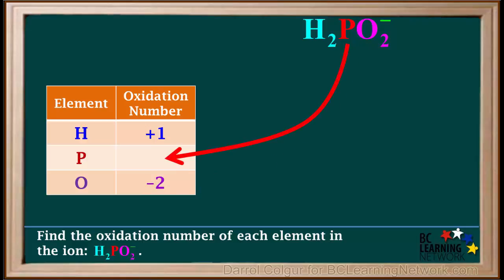We don't know what the oxidation number of phosphorus is, so we'll call it x. The oxidation number of a hydrogen atom is positive 1, so two hydrogen atoms have a total charge of 2 times positive 1.